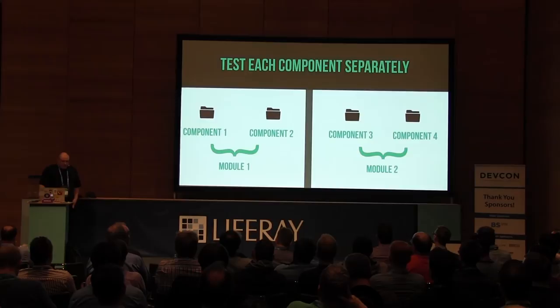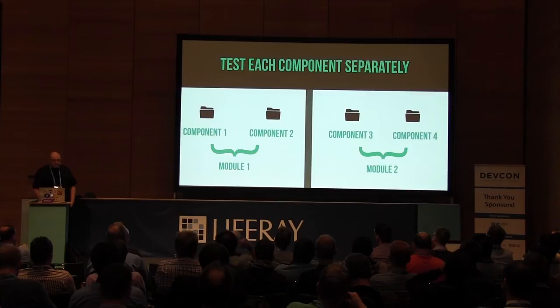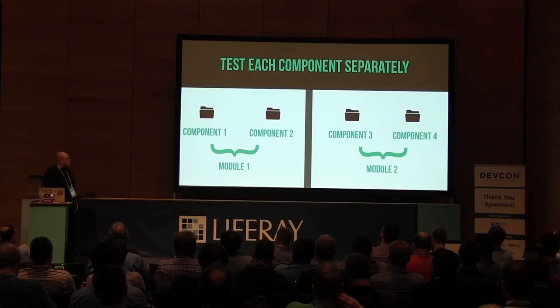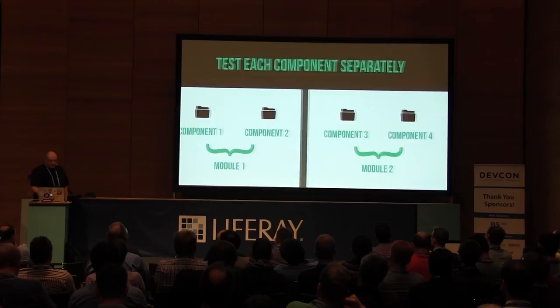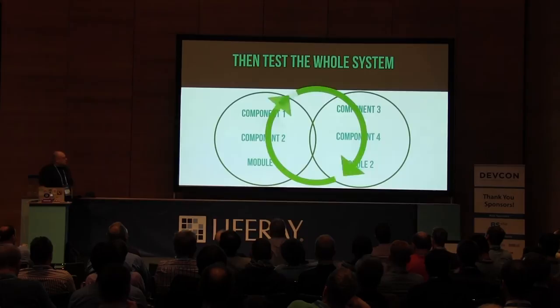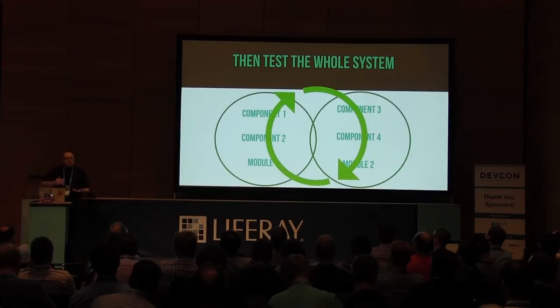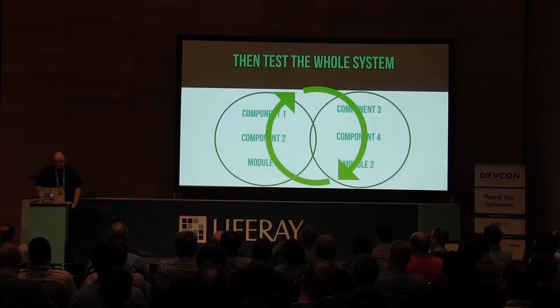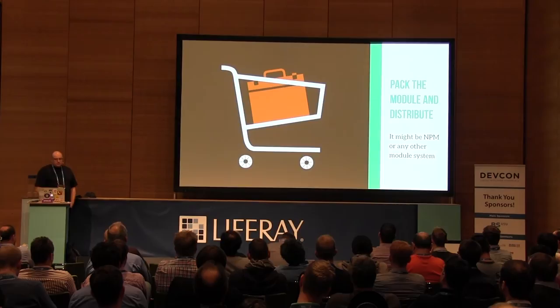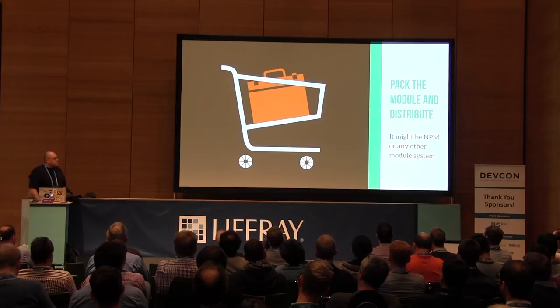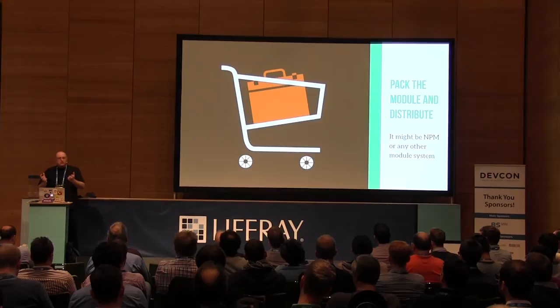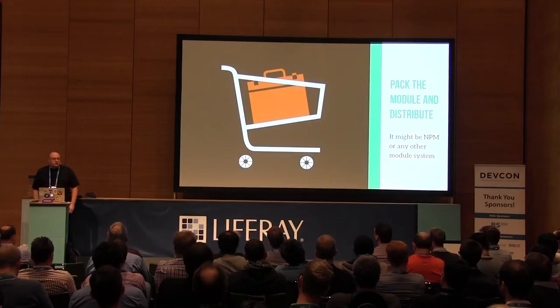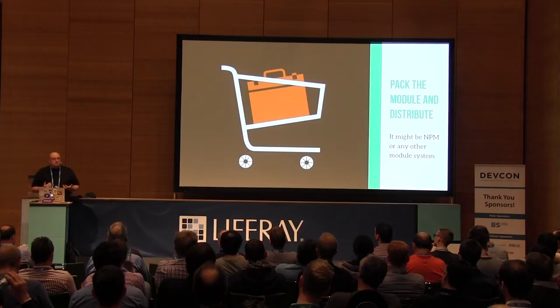Then we go to testing each and every component separately. We have a few components, we test them, they go into module one, module two, or somewhere else. And then, of course, we test the whole system, because unit tests are not enough. We said we are going to mock external dependencies, but this doesn't mean the application works — we haven't proved anything. We have to see how the whole modules work in conjunction. Then try to pack the modules and distribute them — it may be NPM or some other module system. Try to write those modules in a way that tomorrow you can expose them to someone else, to an external repository, to some of your other applications. Be prepared for that. And when you design the system, since the beginning, try to design it with the idea to share code with other people.